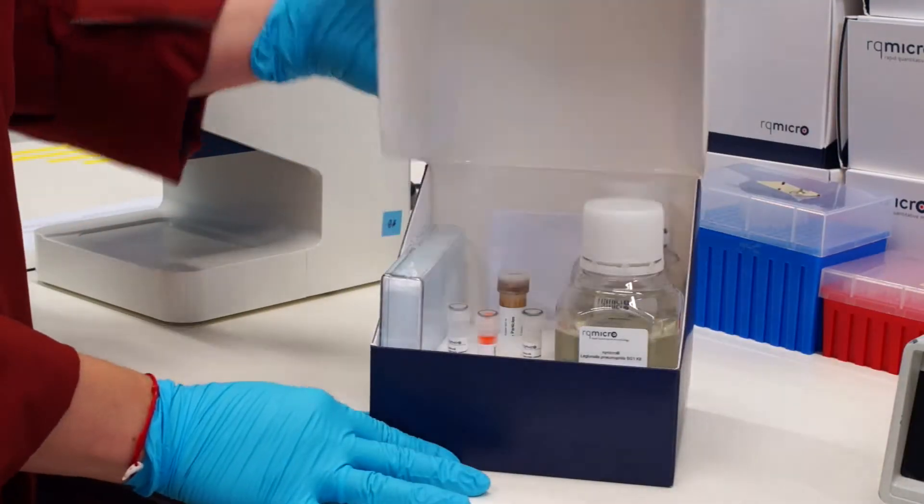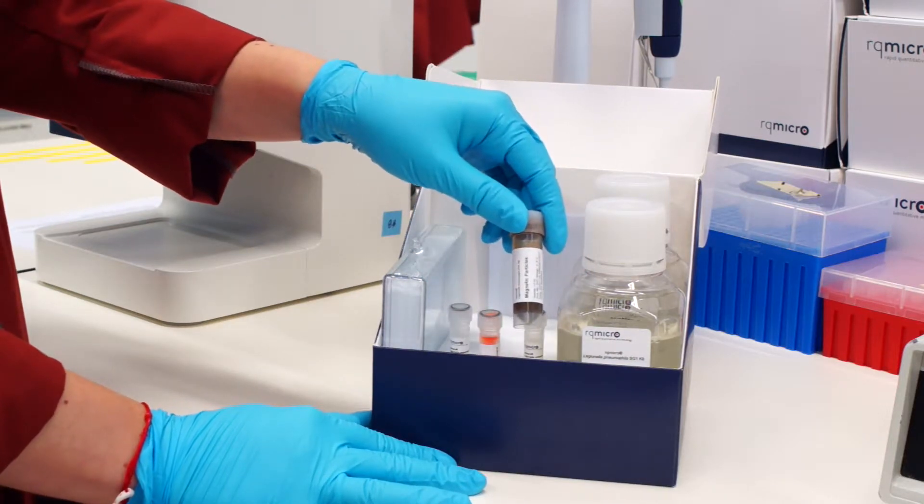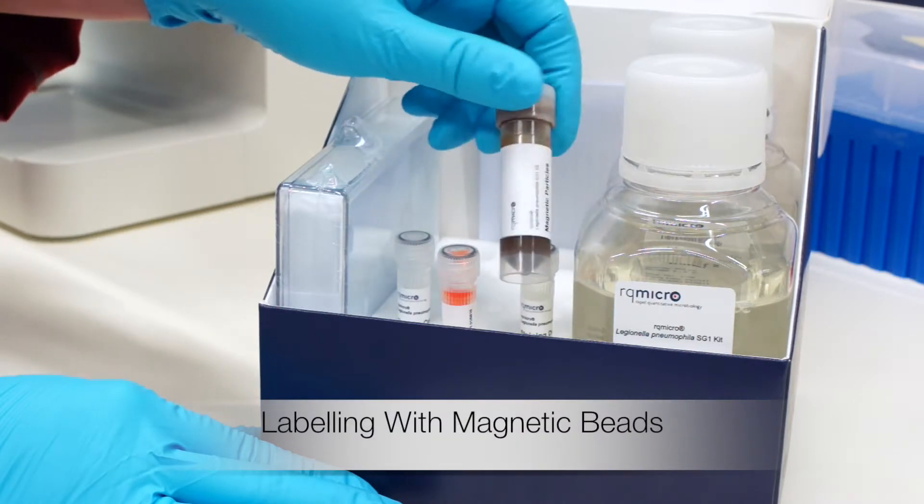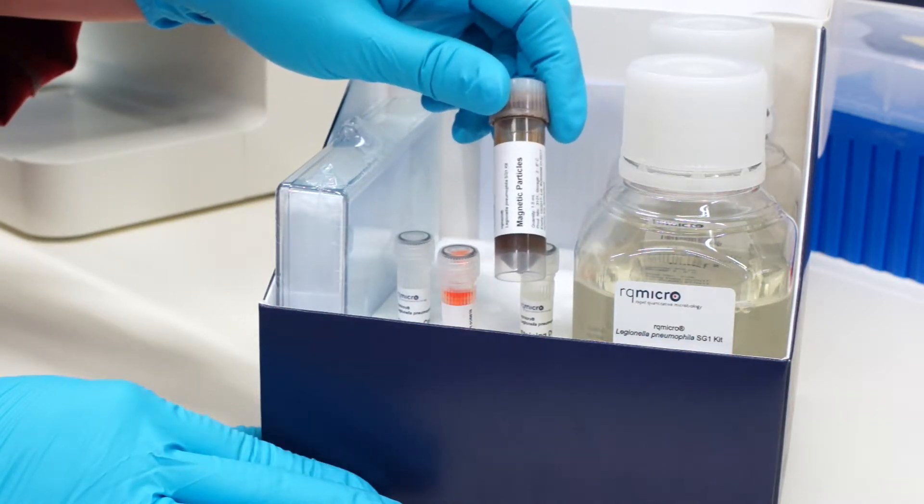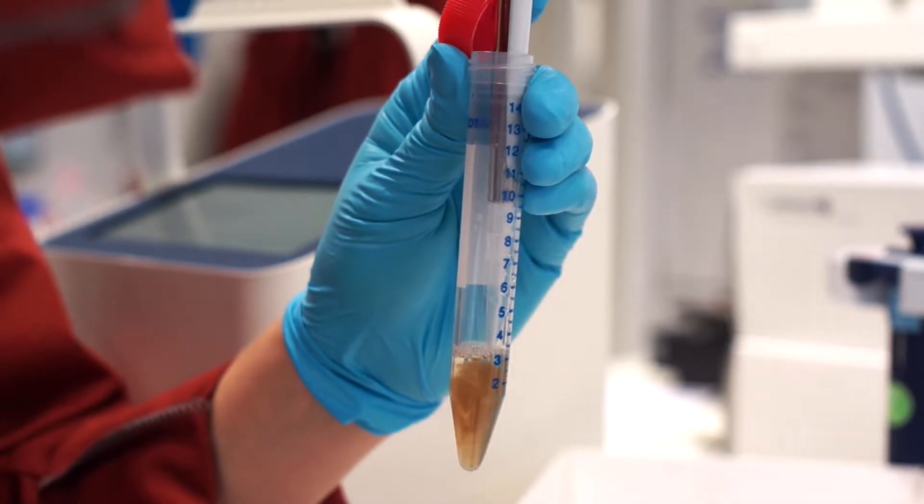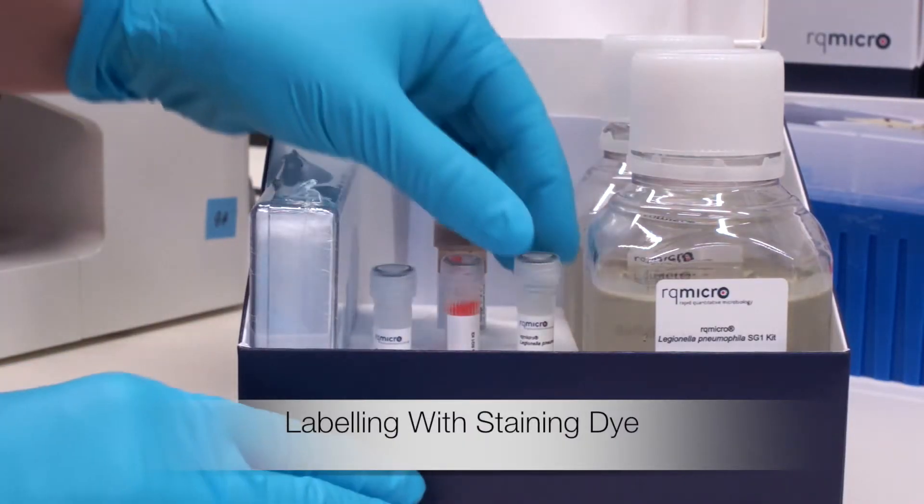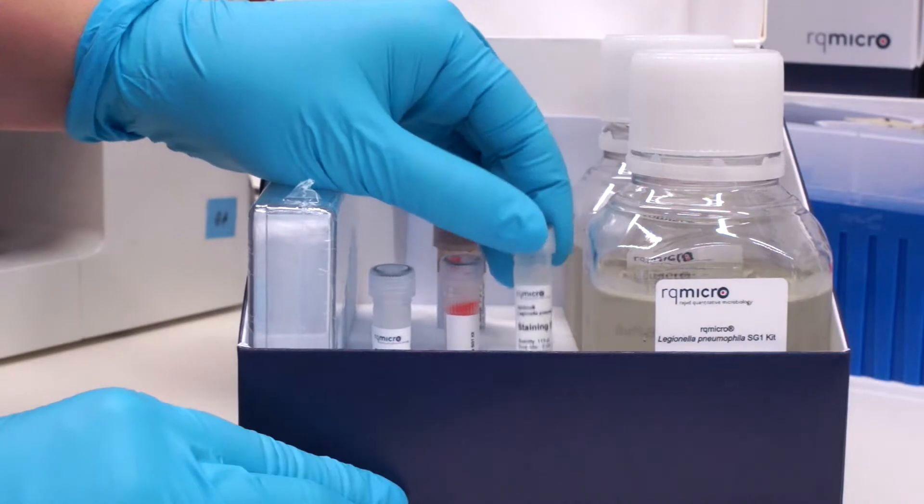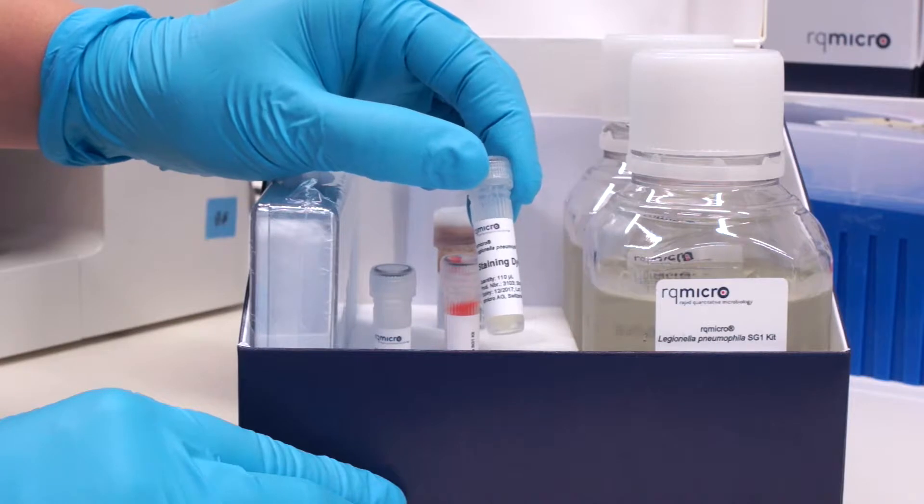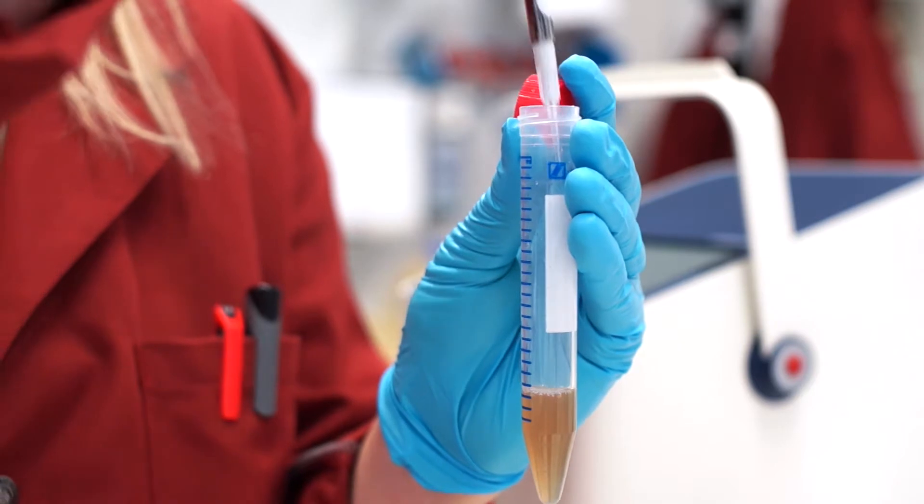Now I will add two types of antibodies produced by RQ Macro to my sample. This mix contains antibodies bound to immunomagnetic particles. They will bind to the target cells and thereby enable the immunomagnetic separation. I'm adding 30 microliters of the magnetic bead solution to my 3 ml sample. I'm also labeling the Legionella cells with antibodies bound to a fluorescent dye. Thereby I can quantify them with the flow cytometer after the immunomagnetic separation. I am adding 10 microliters of staining dye per 3 ml sample.